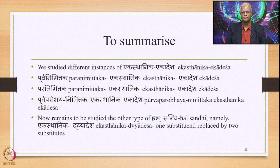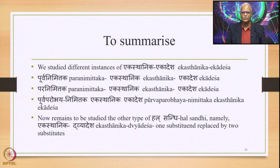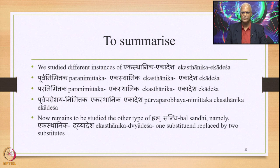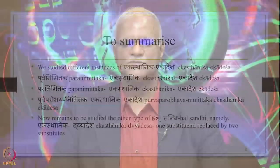To summarize, we have studied different instances of Ekasthanika Ekadesha: first Shchutvam Sandhi when we interpreted the words Shchuna and Shtuna, then several instances of Paranimittaka Ekasthanika Ekadesha. What remains to be studied is the other type of Hal Sandhi, namely Ekasthanika Dvyadesha, where there is one substituent which gets replaced by two substitutes. This we shall do in the next lecture. Thank you very much.